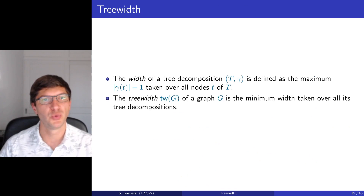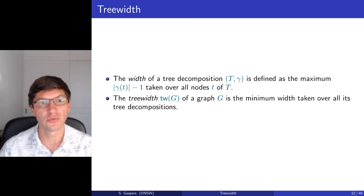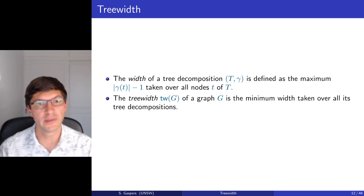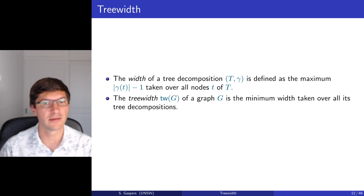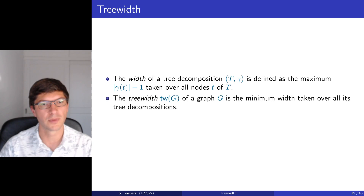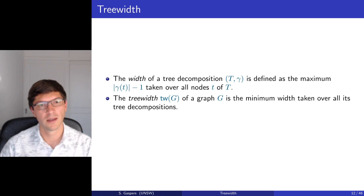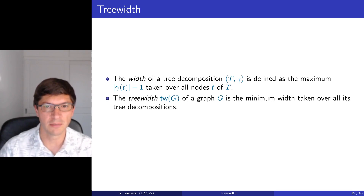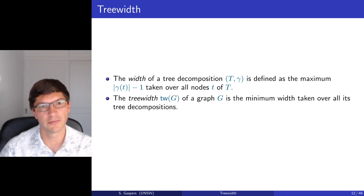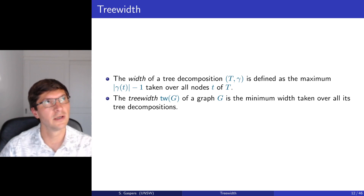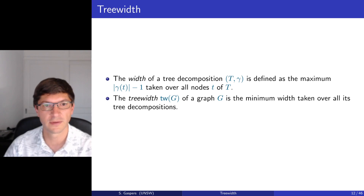While any tree decomposition is valid — even putting all vertices in one bag — small bags are more useful. The width of a tree decomposition is the maximum bag size minus one (the minus one ensures trees have tree width 1). The tree width of a graph G is the minimum width over all possible tree decompositions of G.